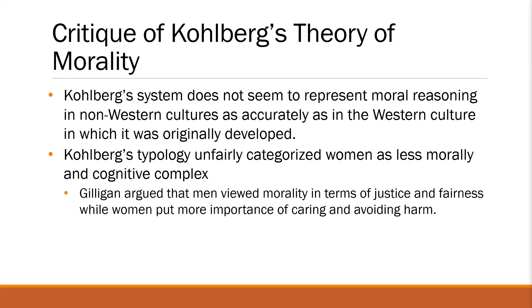Other than that, his theory is somehow biased against women — not because women score lower in moral maturity, but according to Gilligan, what men and women value differs. Men value justice and fairness, whereas for women, what's more important is care and avoiding harm. Those are some of the common criticisms against Kohlberg's theory of morality. I hope you learned a lot from this lecture and understood how people at different stages differ in terms of moral reasoning. Thank you very much for listening. See you next time.